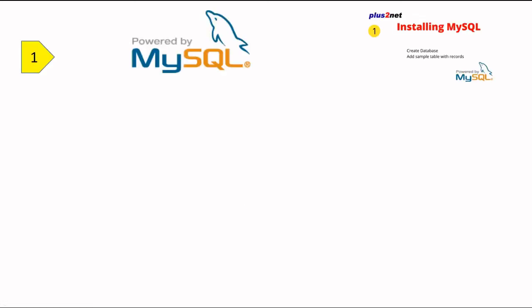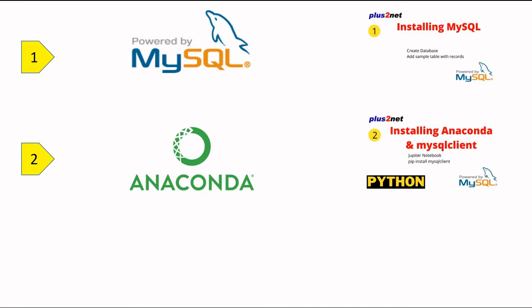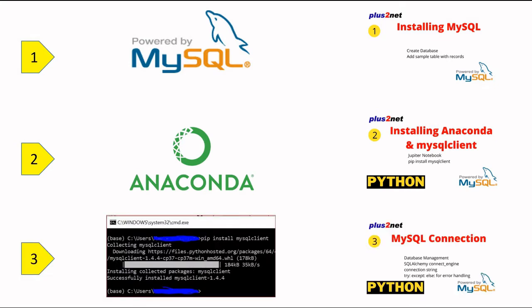Hi friends. First, start with downloading MySQL and install it. Second is the Anaconda environment, which you can download and install. Third is the connection between MySQL and our Python. We will be using MySQL Connector or MySQL Client for this, and these three video tutorials are available — you can watch them and understand how to prepare this platform.